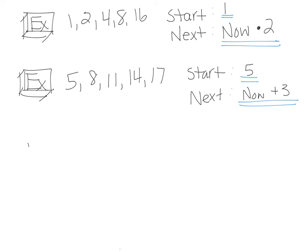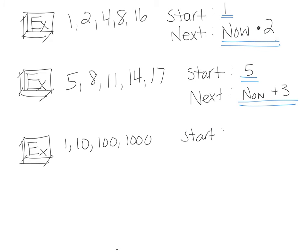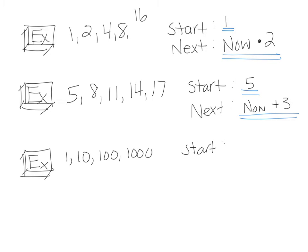One more. The sequence is 1, 10, 100, 1,000. Your start is going to be 1. Then your NEXT — this is a multiple. When it's a multiple, it's going to be your NOW times 10.